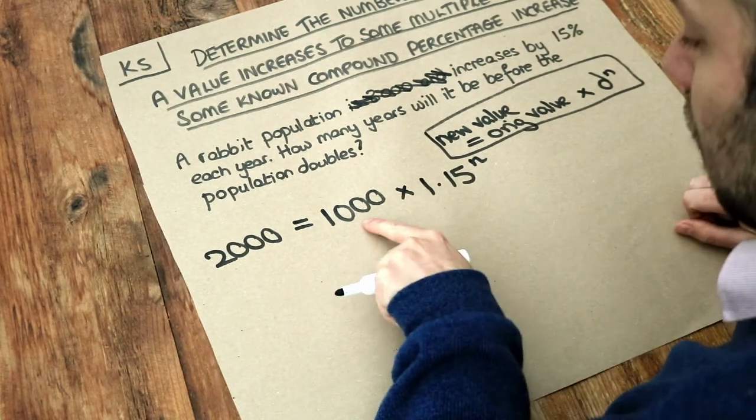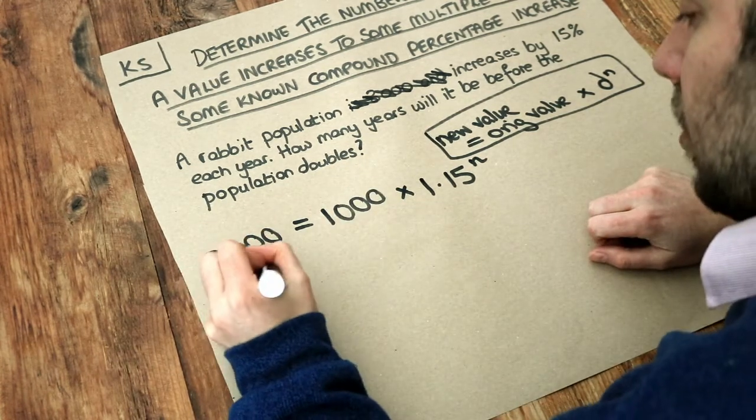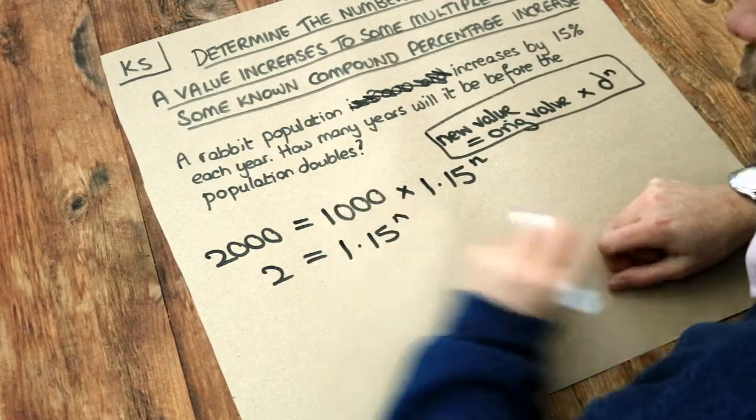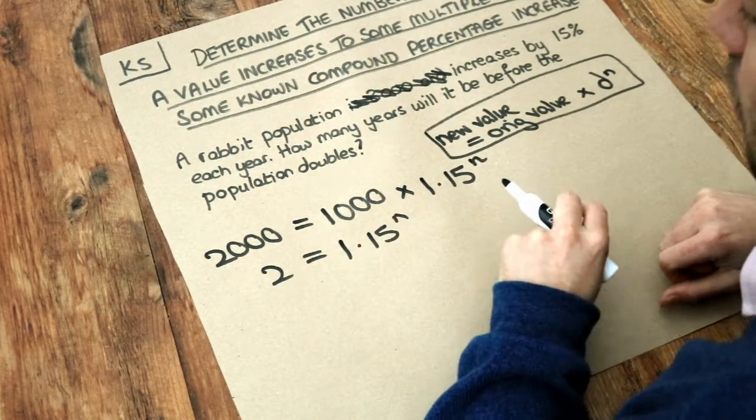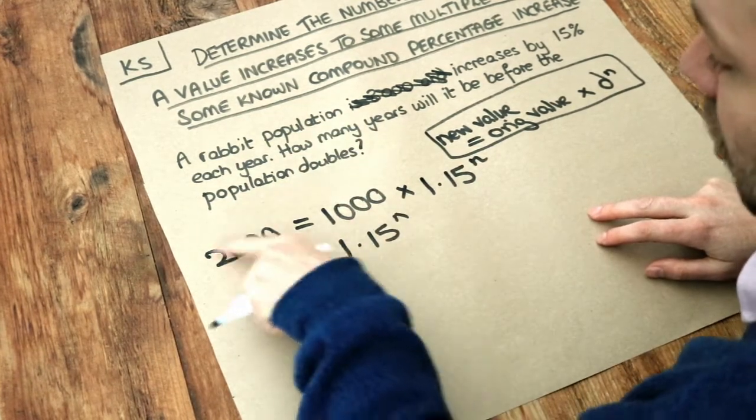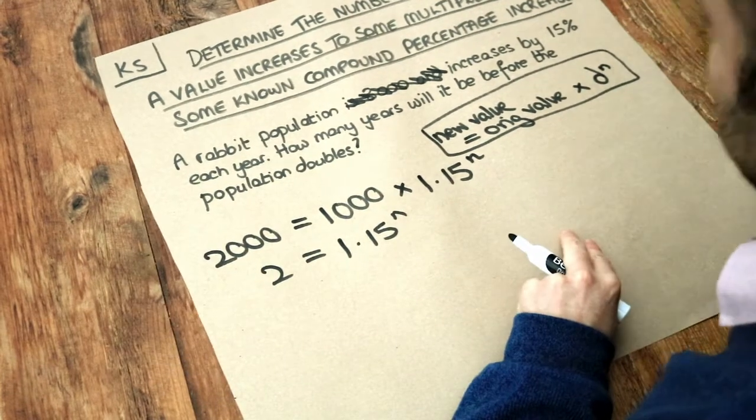First thing to note is we could divide both sides by 1,000, so 2,000 divided by 1,000 would just be 2, and that gets rid of the 1,000. So we've just got 1.15 to the n is equal to 2. And that's why it doesn't matter what the population originally was, because let's just say that was 100 and that was 200. 200 divided by 100 would still be 2. It doesn't matter what value you start with.